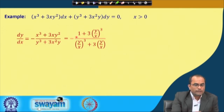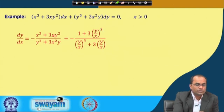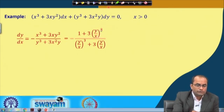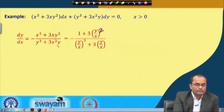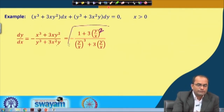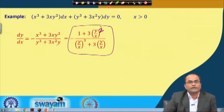Once we recognize this situation, we can rewrite by dividing numerator and denominator by x³. Doing this, we get 1 + 3(y/x)² in the numerator (noting that x·y²/x³ = (y/x)²) and (y/x)³ + 3(y/x) in the denominator. So everything is now expressed as a function of y/x.